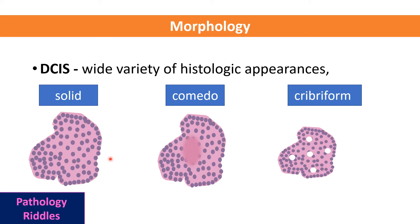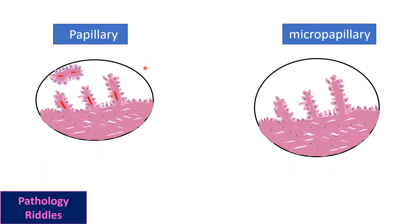Coming to different morphological variants of DCIS: in the solid variant, the whole space is filled up with cells and looks completely solid. In the comedo variant, it looks like the solid variant but has a central large area of necrosis. In the cribriform variant, there is a sieve-like pattern with small holes in between the group of cells.